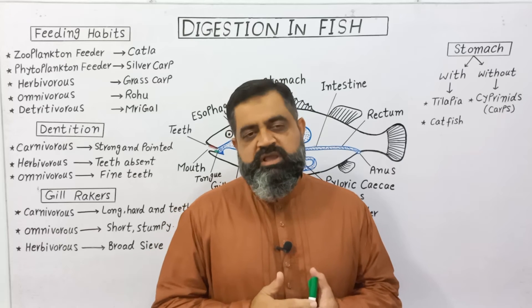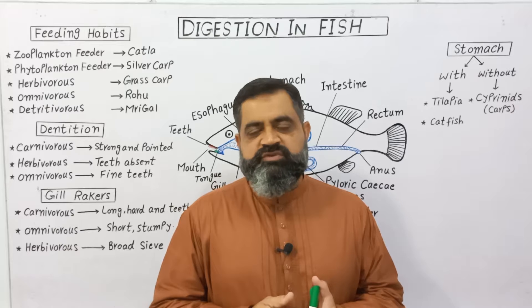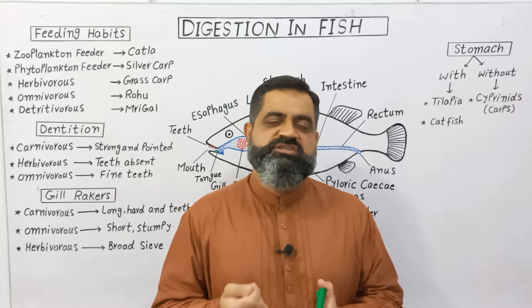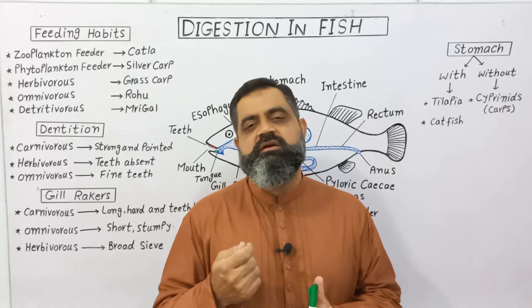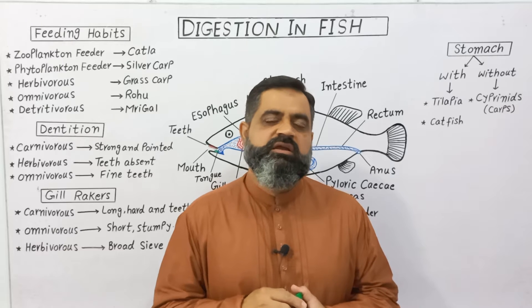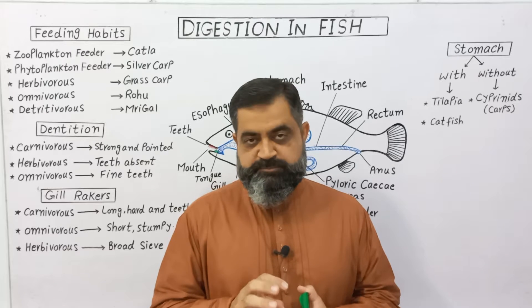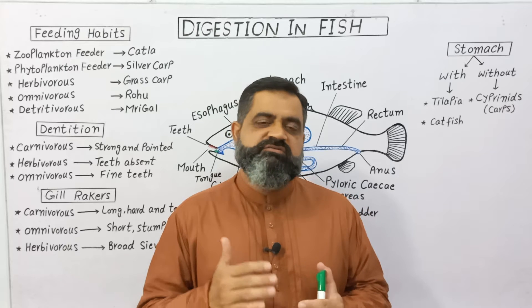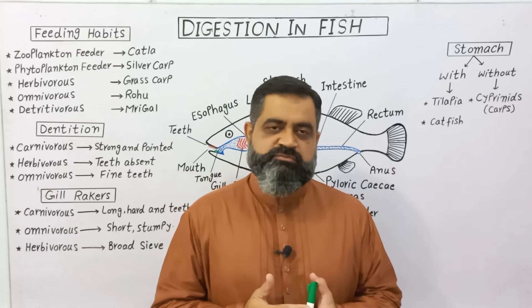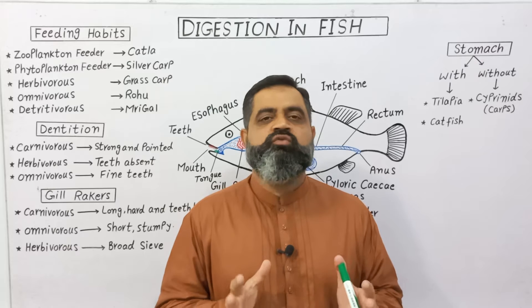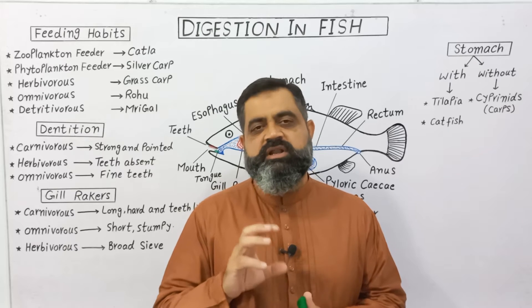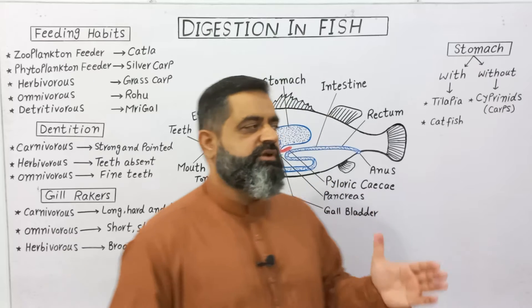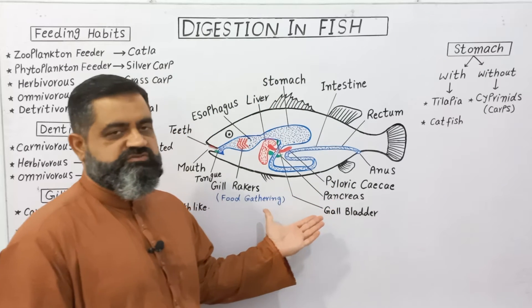There are so many different types of fish, like Cyclostomata, cartilaginous fish, and bony fishes like Osteichthyes. Each type of fish has a different type of digestive system. We are going to discuss the digestive system of a generalized fish, and I have taken a diagram of a generalized fish to show its digestive system.